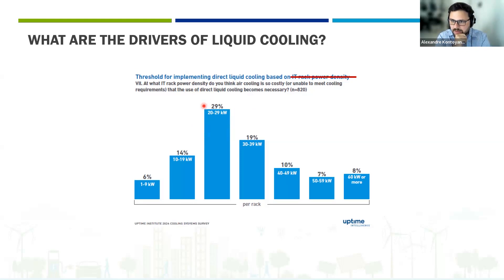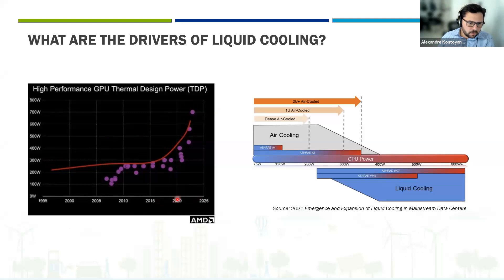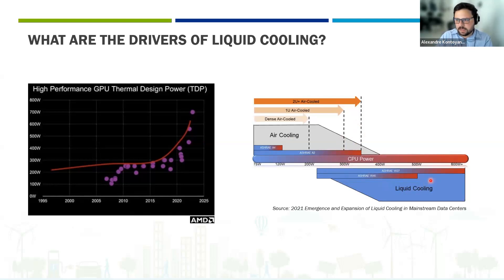It's not rack density that drives liquid cooling. What actually drives liquid cooling is the Thermal Design Power — we call it TDP — which is how much power a chip gives to the environment when working. Looking at AMD, in 2024, GPU TDPs have grown up to 700 watts. The problem is not just the heat, but how much heat is produced in that small area. According to an ASHRAE graph, chips around 350 W/cm² need to go to liquid cooling — it's chip density, not rack density.